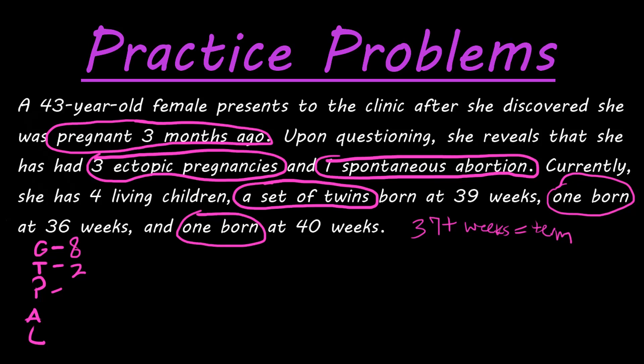Preterm: we see one born at 36 weeks, so preterm is one. For abortions, this includes ectopic pregnancies, because if a fetus exits the body before 20 weeks it's considered an abortion. An ectopic pregnancy is not viable because fertilization occurred outside the uterus, usually in the fallopian tube. We have three ectopic pregnancies and one spontaneous abortion, so our total number of abortions is four.